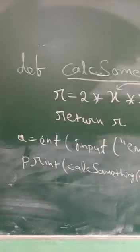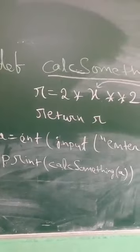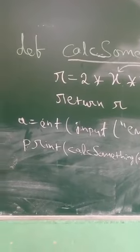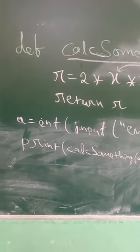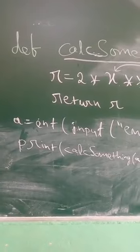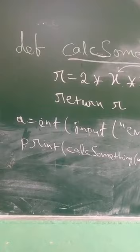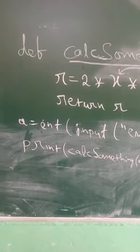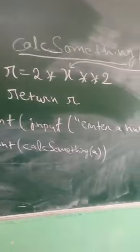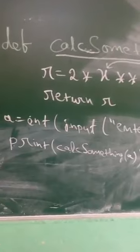We are continuing from the earlier video. The next line is A equals to C. A is again in the indentation — it has not taken the first space. That means it is not part of the calc_something function. So, calc_something has only two lines.